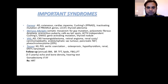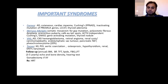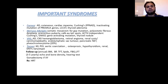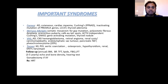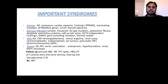Number two is McCune-Albright syndrome, which is very important because it involves so many endocrine glands. It is somatic mosaicism for a GSP mutation, with polyostotic fibrous dysplasia — which we discussed can be treated with bisphosphonates — precocious puberty, café-au-lait spots, ACTH-independent Cushing's, and a GNAS1 gene activating mutation. An important point: GNAS1 mutation can be activating or inactivating. Activating mutation gives McCune-Albright syndrome, while inactivating mutation gives pseudohypoparathyroidism.